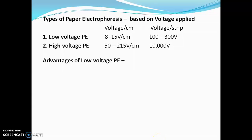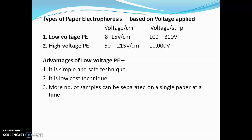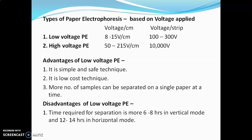Advantages of low voltage paper electrophoresis: it is a simple and safe technique because low voltage is used. It is also a low-cost technique because most parts of the equipment are made of high-quality plastic. Additionally, more samples can be separated on a single paper at a time. Disadvantages: it is a time-consuming technique — generally 6 to 8 hours are required in vertical mode and 12 to 14 hours in horizontal mode.